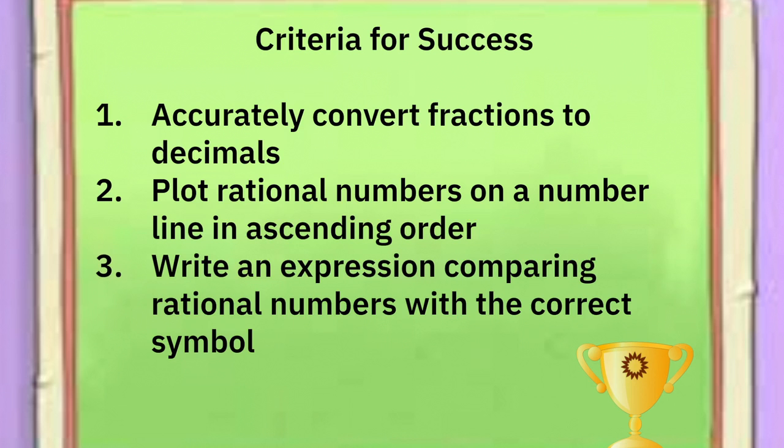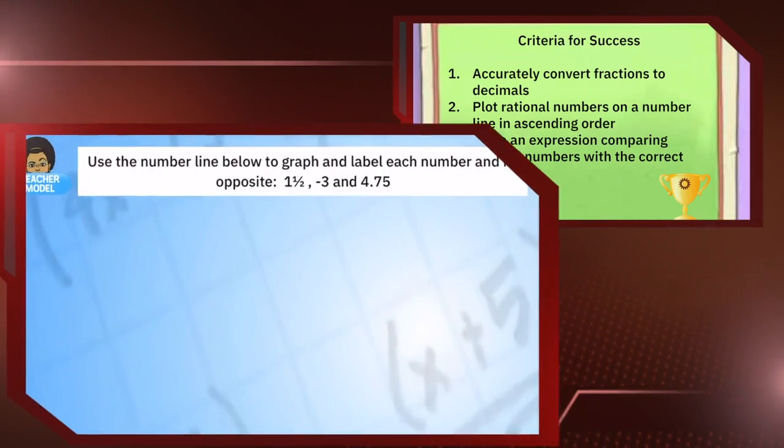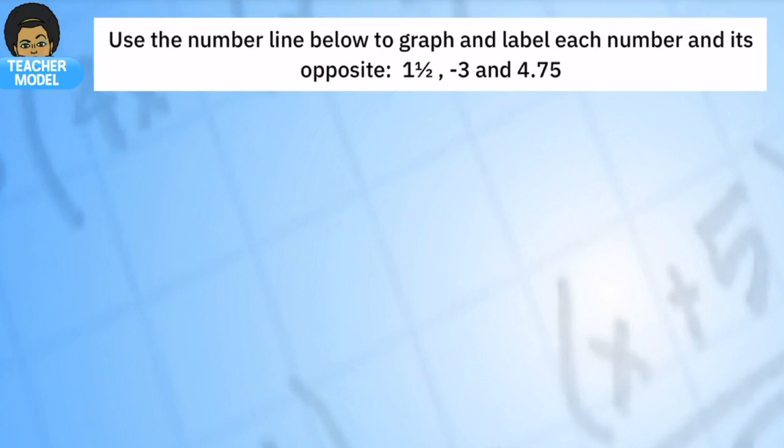So let's jump into today's lesson. Here's our first example, we're going to graph and label each number and its opposite. And the first thing you'll probably notice is that I have a whole number, decimal, and a fraction.